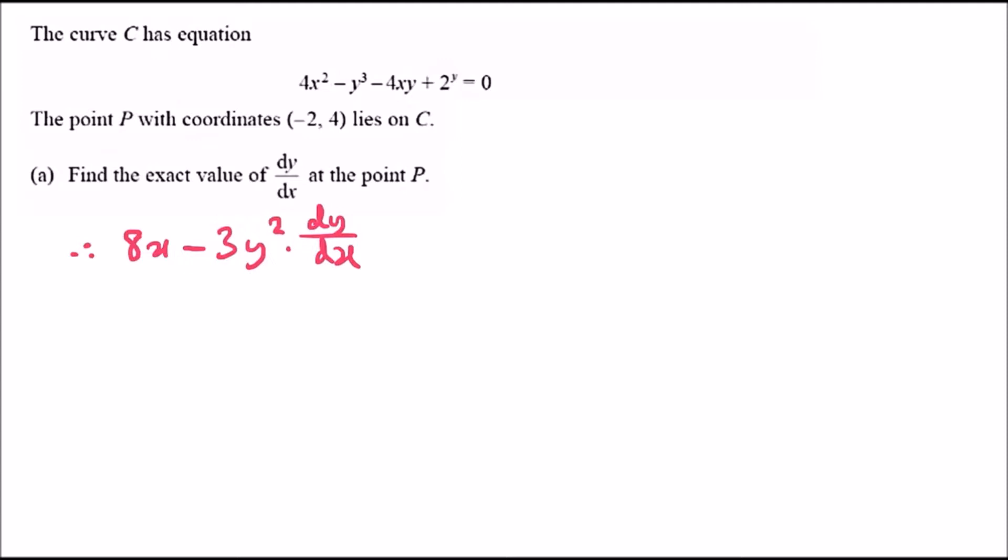Next, notice we got -4xy. This is actually a product of 4x and y. Suppose u = 4x and v = y. We'll use the product rule. The derivative of 4x is 4, and the derivative of y is dy/dx. So it's 4x(dy/dx) plus y(4), which gives us 4x(dy/dx) + 4y. Put a bracket when dealing with individual products.